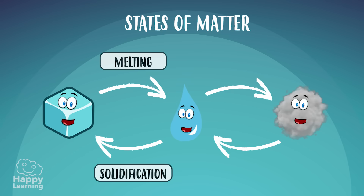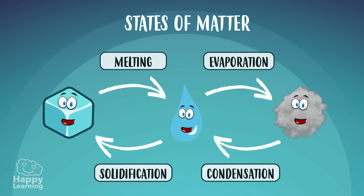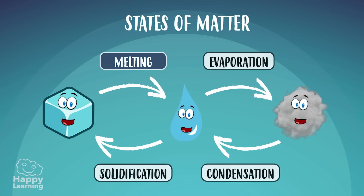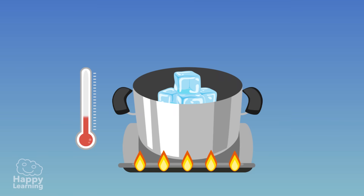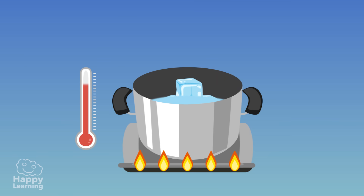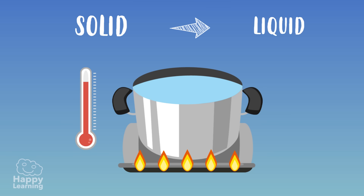Melting happens when matter changes from its solid to liquid form, and happens after rising temperature. When we heat an ice cube or leave it at room temperature, it melts and changes from solid to liquid.